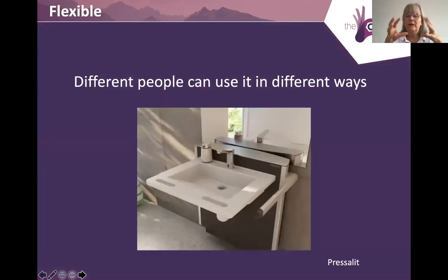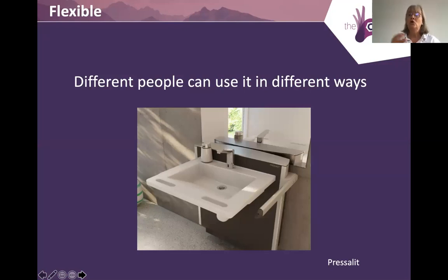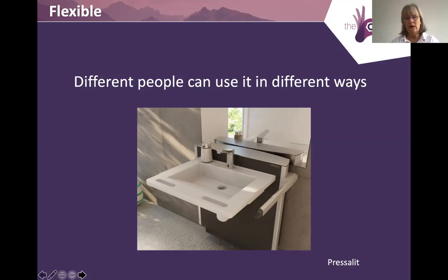Flexible means different people can use it in different ways, but also that the client themselves can use it in different ways. For example, someone who is ambulant but has chronic fatigue may at times use a wheelchair; someone with a brain injury may be able to do more in the morning than in the evening. A height-adjustable sink is a classic example — it allows somebody to stand and do their morning personal care routine, lower it slightly to perch during the day, and lower it further to use from a wheelchair in the evening.